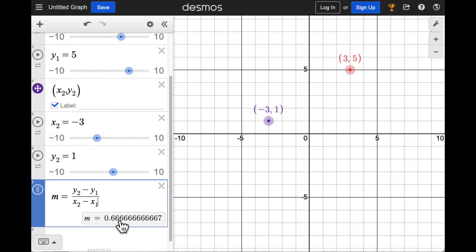This value of M is for the slope of the line connecting these two points. Move the points around and see how the value of the slope changes.